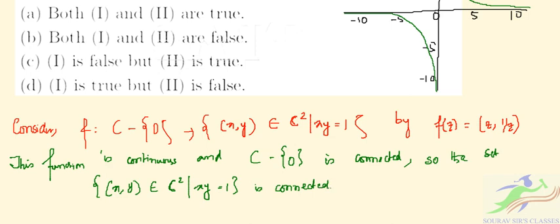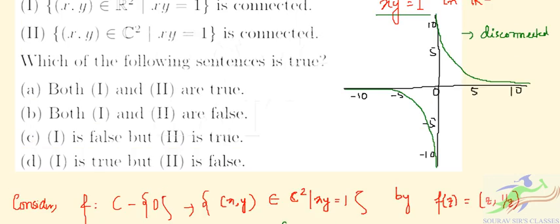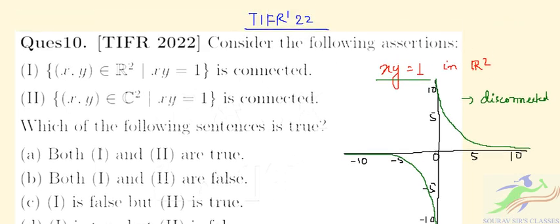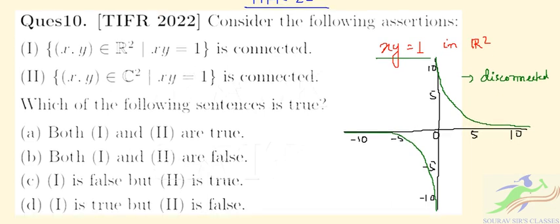So from here, in the two statements, out of the two statements in question number 10, the first statement is not true. So this one is not true. This is connected, so only option...